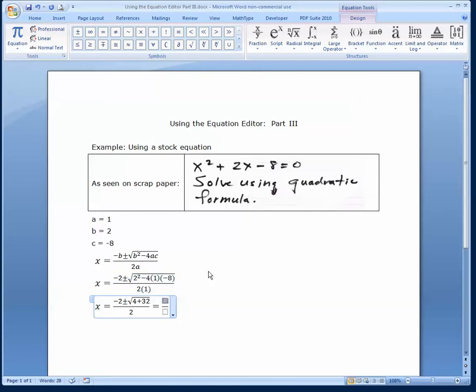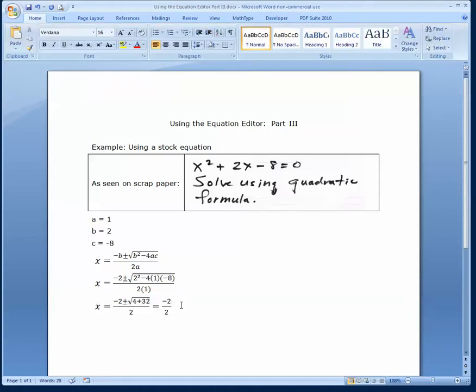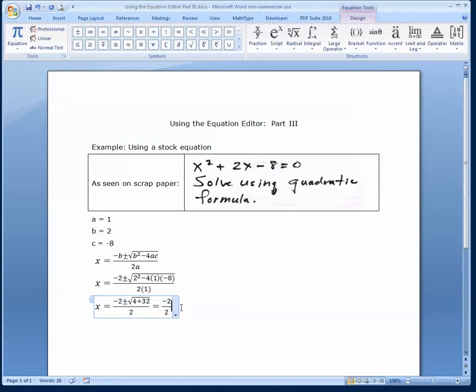At the top, we have minus 2 over 2. Let's put the entry point right there, and come up to our list of symbols and put in plus and minus. And we want another fraction.